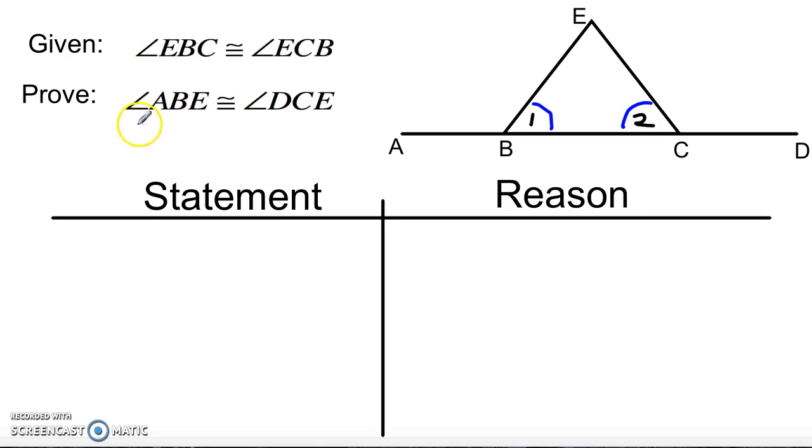They're asking me to prove that angle ABE, that would be this guy, is congruent to angle DCE, and that would be this guy over here. So it should be pretty clear to you that you have a pair of congruent angles. Each one of those has a supplementary angle, which means this is going to be a supplement of congruent angles proof.